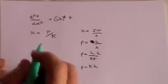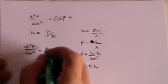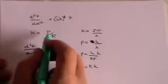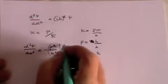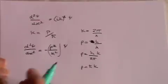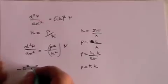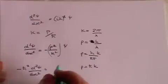So now we can say that d 2 psi by dx squared is i k squared, which is of course minus k squared, and minus k squared is minus p squared over h bar squared times psi. Multiplying through by minus, we get minus h bar squared d 2 psi by dx squared equals p squared psi.